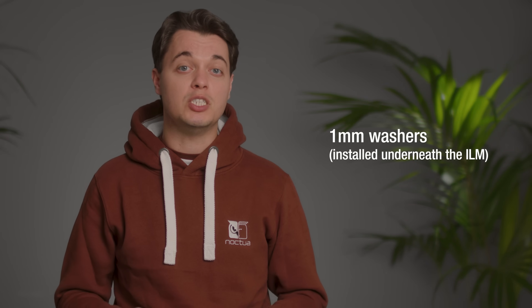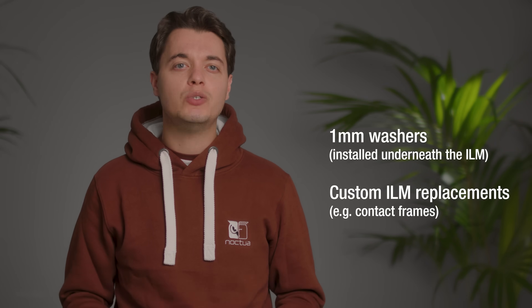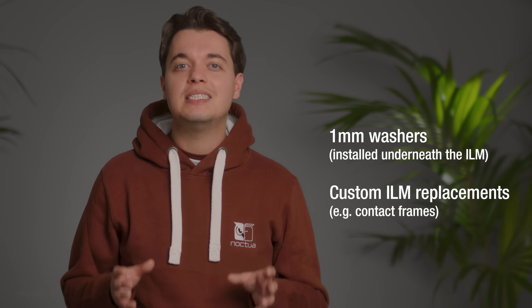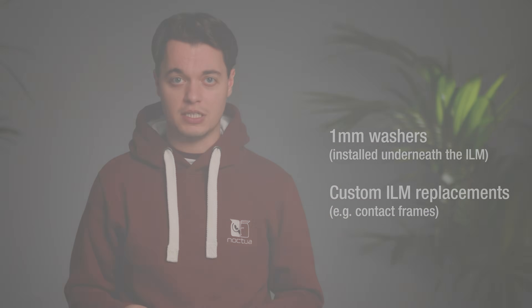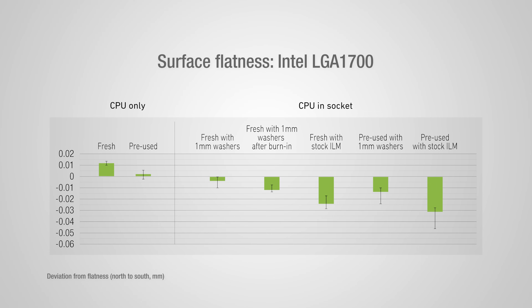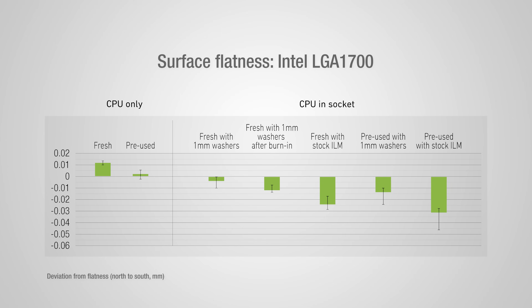Whilst this deformation can be reduced — either by putting 1mm washers underneath the ILM to reduce pressure, or by using custom ILM replacements such as contact frames that apply less pressure — the deformation of the CPU can be partly permanent, meaning that CPUs that have previously been installed under the stock ILM pressure may only show limited improvements from these modifications.